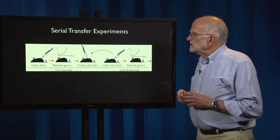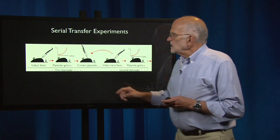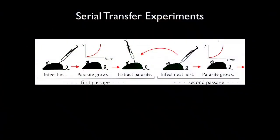A serial transfer experiment works as follows. You have a group of genetically homogeneous mice which have never seen the particular pathogen before. One of them is infected. The parasite grows exponentially and is then extracted. It is then used to infect the next host, and this process continues each time — the parasite is encountering a naive host that is genetically uniform, growing exponentially.